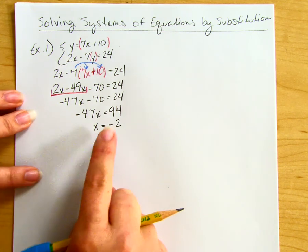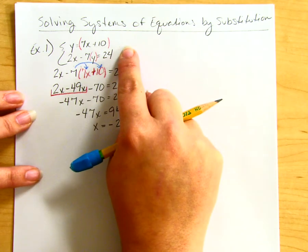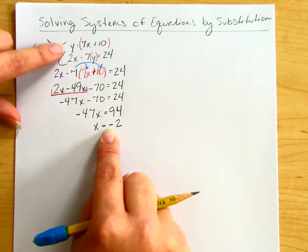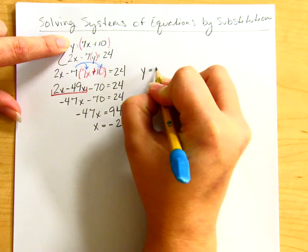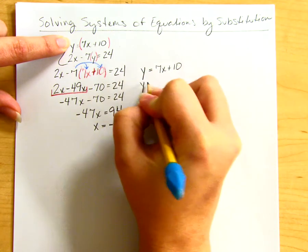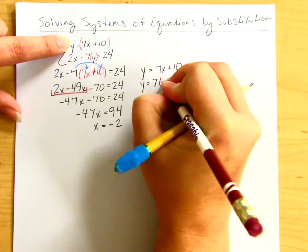That's only half of my answer. I need to plug this back into one of the original equations. Usually in a substitution problem, it's easier to plug your first value into the equation that's already solved for the variable. So I'll use y = 7x + 10 and replace x with -2.